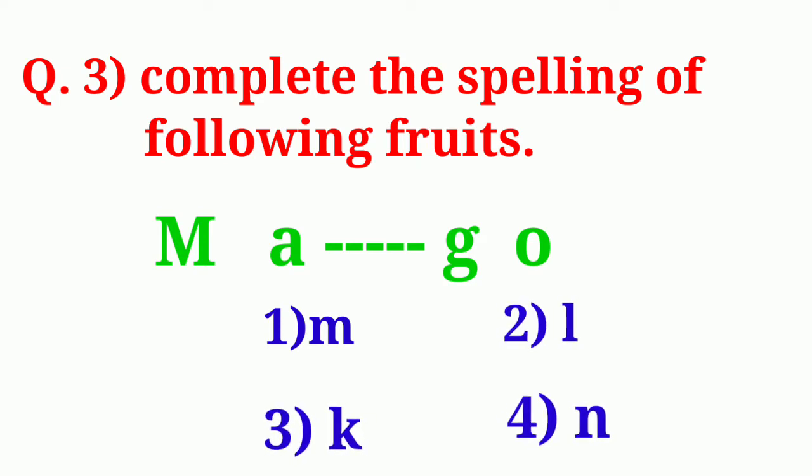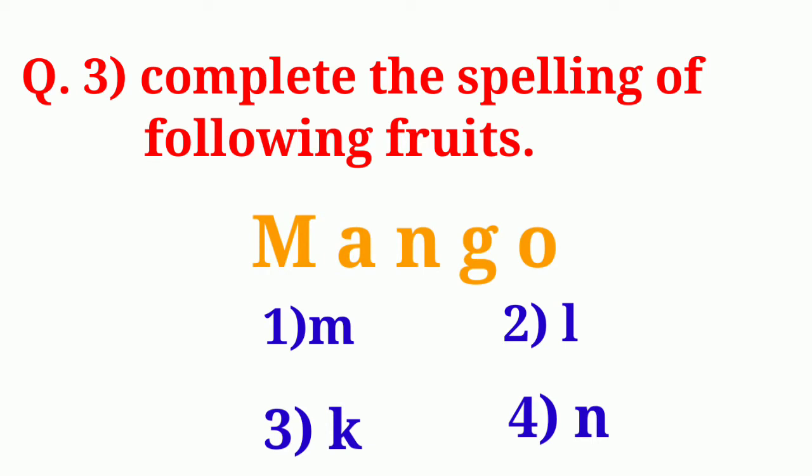The spelling of mango is, M, A, N, G, O. We have to write N to complete the correct spelling. Hence, right answer is N.